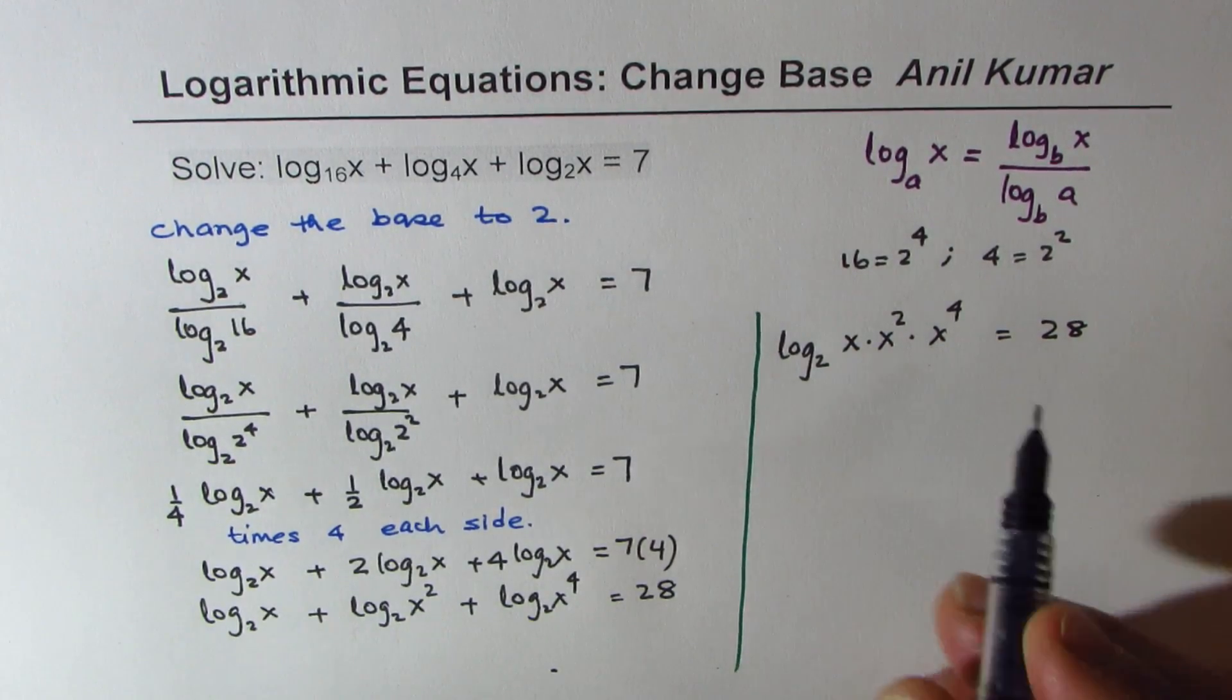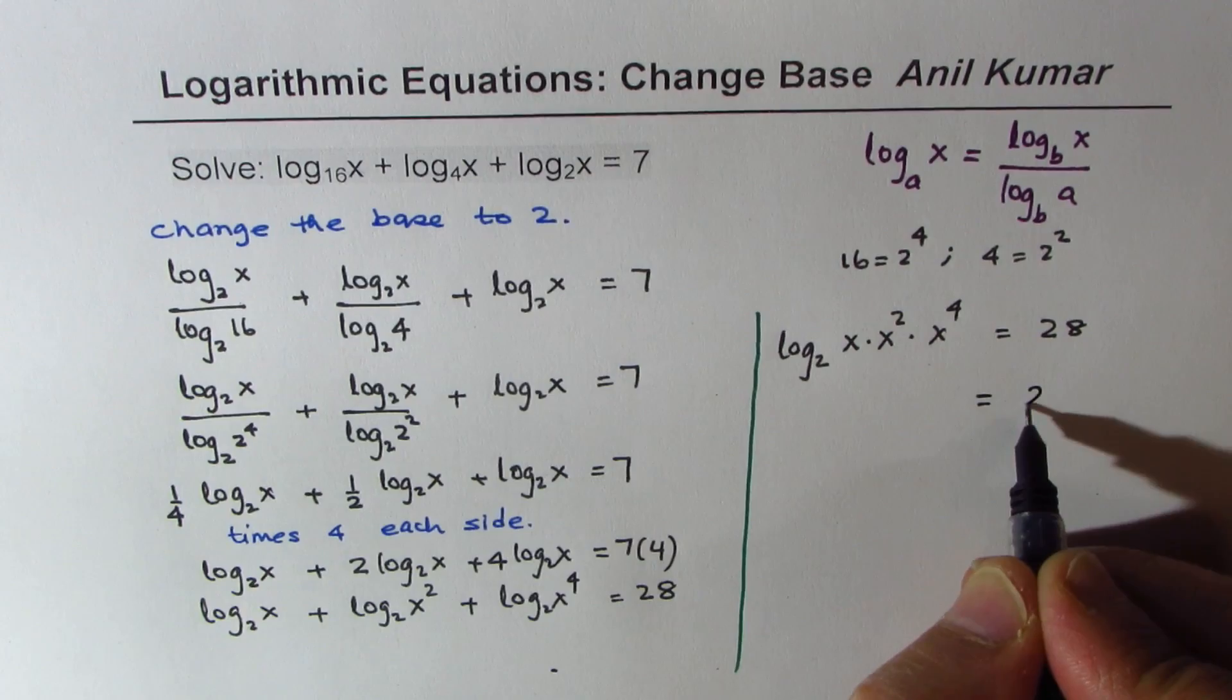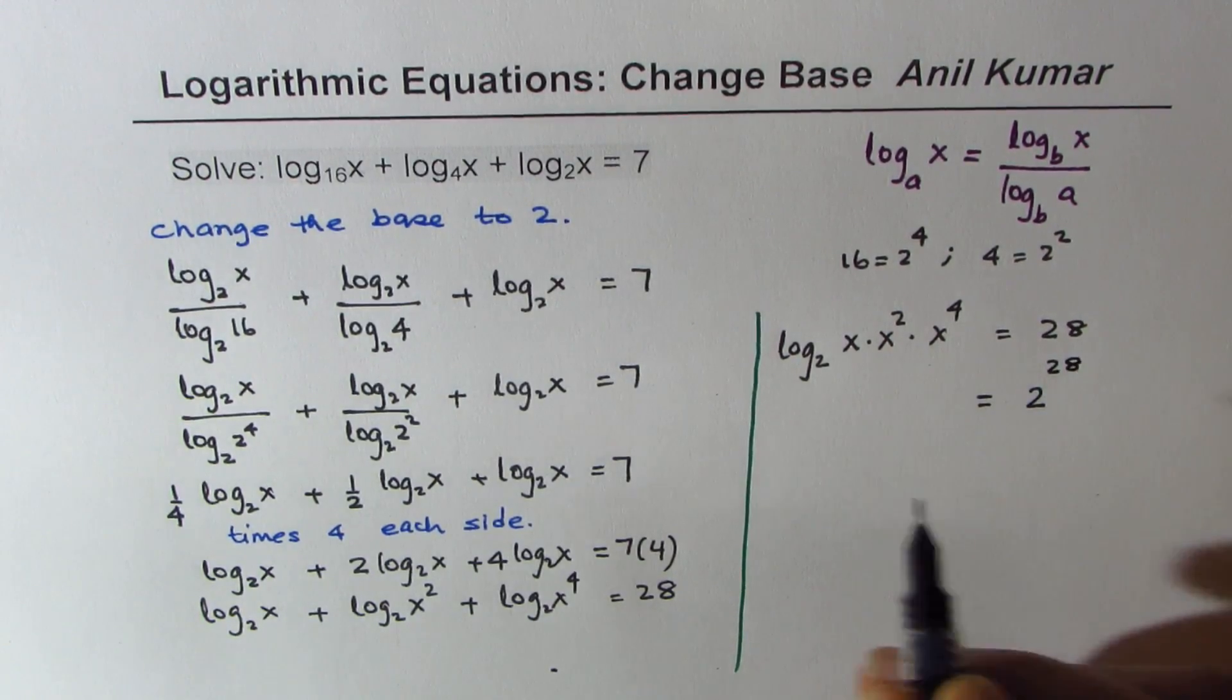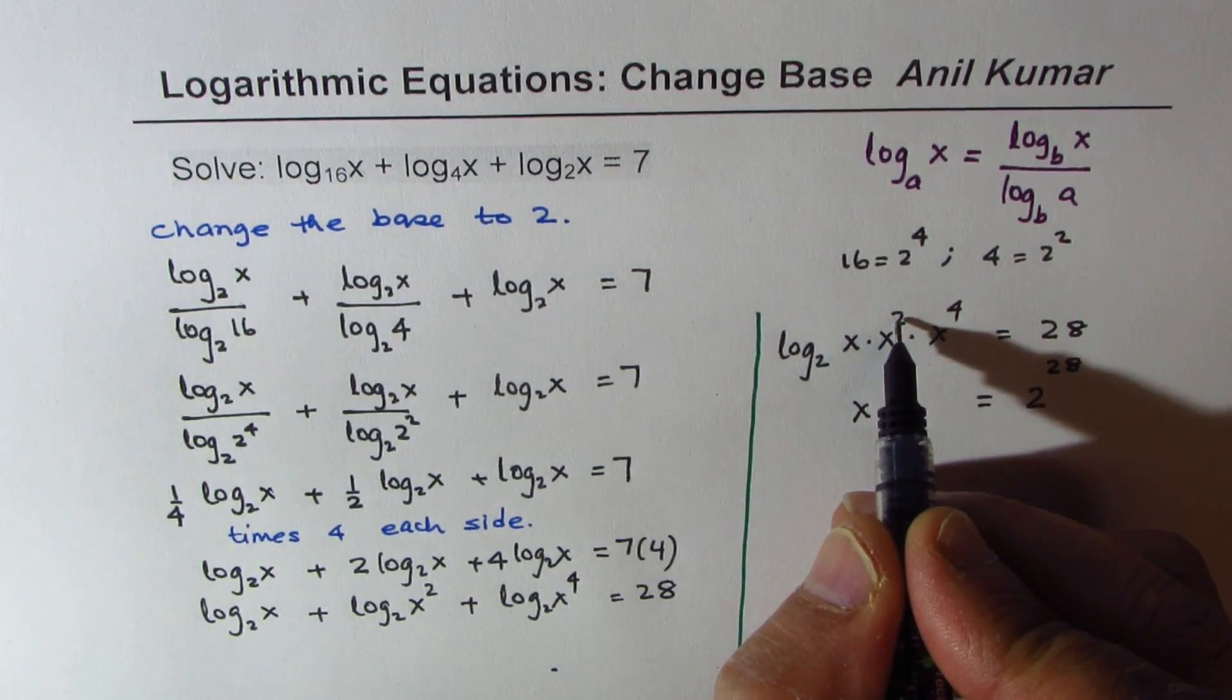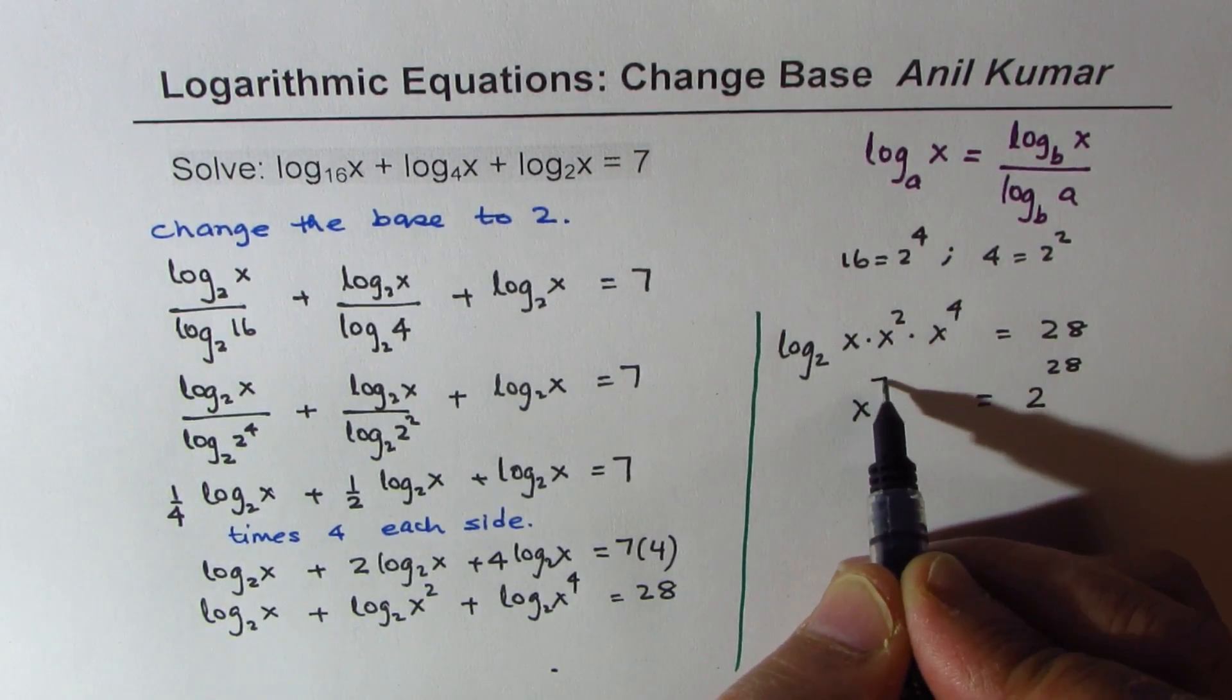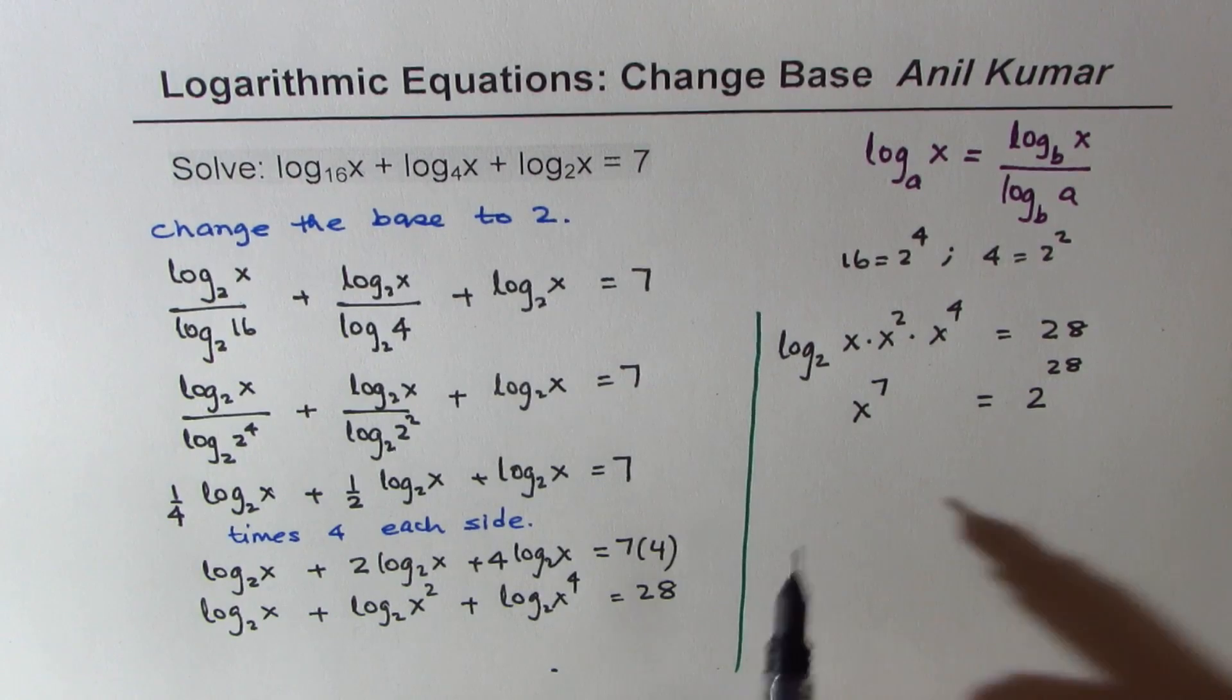Now writing it in exponential form, we could write this as 2 to the power of 28 is equal to x to the power of 1 plus 2, 3, 3 plus 4, 7. So we get x to the power of 7.